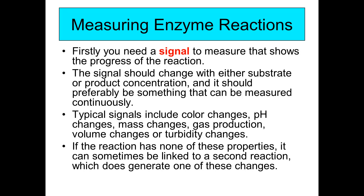How do we measure enzyme reactions in the laboratory? First you need a signal that will measure the progress of the reaction, and that signal should change with either the concentration of the substrate or the concentration of the product. Preferably it should be something that's measured continuously on a gradient rather than an on-off switch. Some of the signals used are color changes — which we use in our lab with the maltose color reagent — pH changes, mass changes, gas production, volume changes, and turbidity changes.